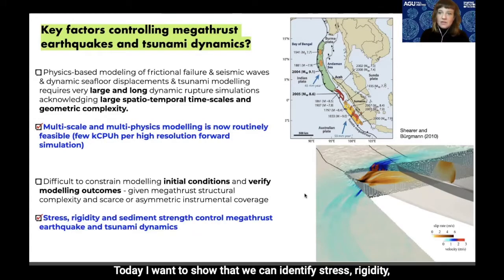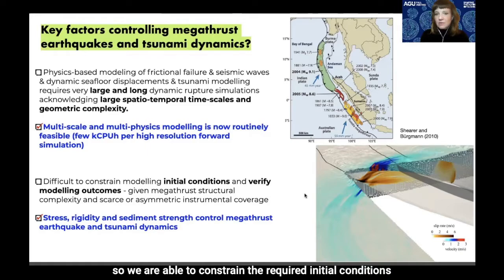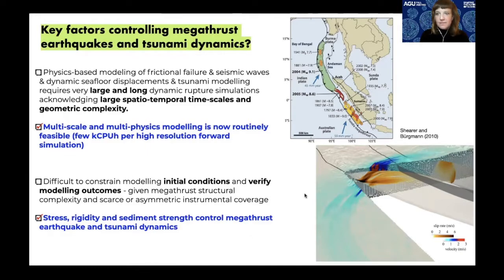Today I want to show that we can identify stress, rigidity, and sediment strength as key regional controlling factors for megathrust earthquake and tsunami dynamics, and that we are able to constrain the required initial conditions from observations.